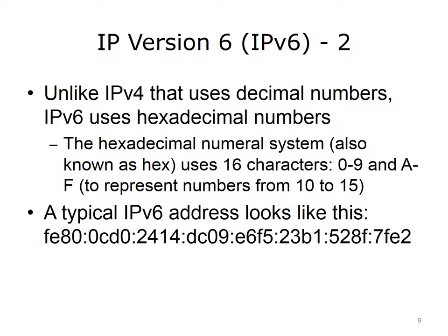Unlike IPv4, which uses decimal numbers, IPv6 uses hexadecimal numbers. The hexadecimal numeral system, also known as hex, uses 16 characters: 0–9 and A–F. A through F represent the numbers 10 through 15. A corresponds to 10, B corresponds to 11, C corresponds to 12, and so on through the letter F. The slide shows a typical IPv6 address.